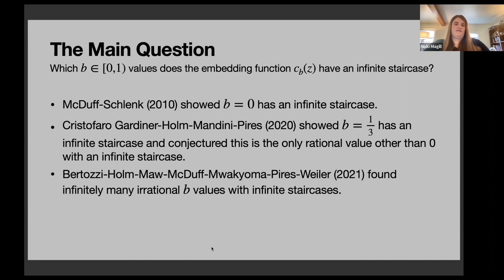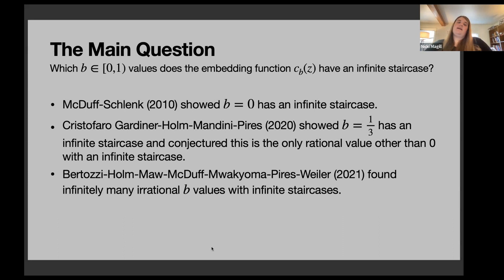Some work has been done on this question previously. McDuff and Schlenk showed b=0 has an infinite staircase — the first infinite staircase ever found, where the target is CP². Cristofaro-Gardiner, Holm, Mandini, and Pires showed b=1/3 has an infinite staircase, and conjectured it is the only rational value other than 0 with one. Another group found infinitely many irrational b values with infinite staircases. We wanted to fully classify which b values have infinite staircases.